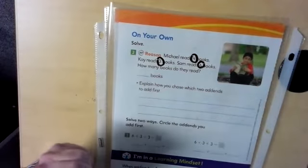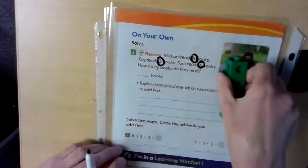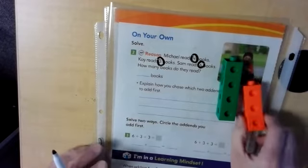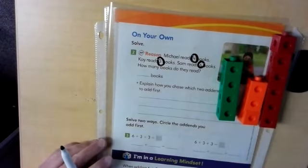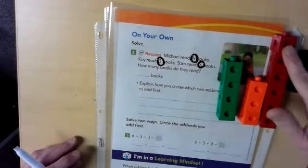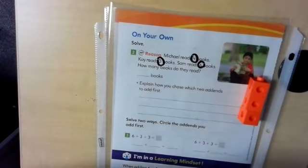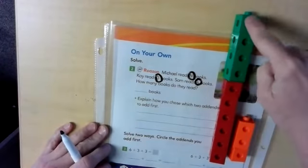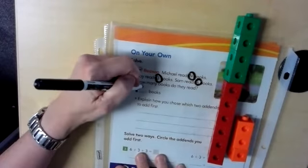We're going to find that out by using our connecting cubes again. So our first number said Michael reads four books. Kay reads three books. And Sam reads six books. Do you see a combination that we could put together to be able to add that? I see six, seven, eight, nine, 10. I see that we can make a group of 10. So let's take a look. Do you see all those? Six, seven, eight, nine, 10, 11, 12, 13 books. 13.